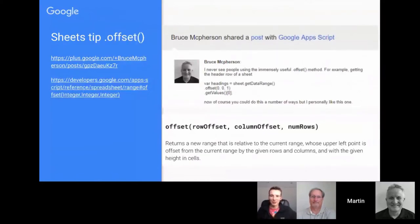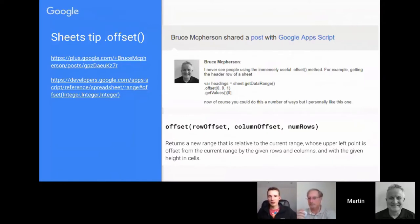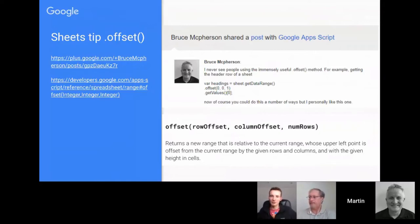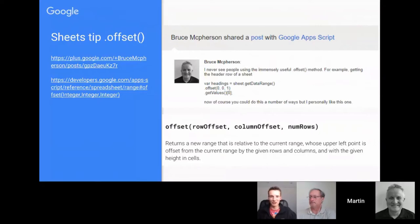There was a nice post from Bruce around the offset function in the Sheets service. There are a number of ways you can use offset — the way Bruce highlighted was to use it to grab the header row. Hopefully you can start using that one in your script projects.